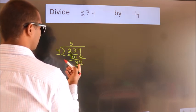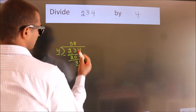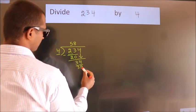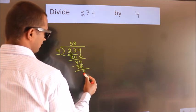A number close to 34 in the 4 table is 4 eights, 32. Now we subtract. We get 2.